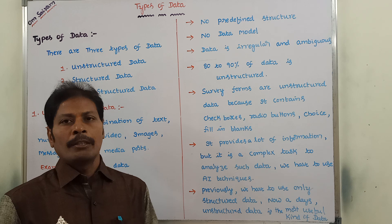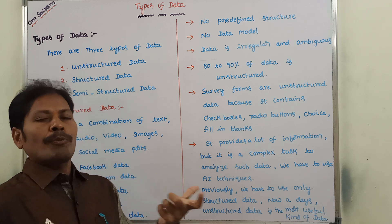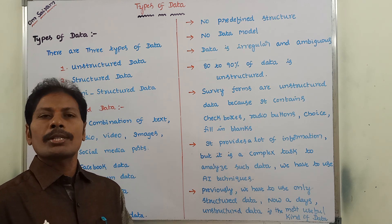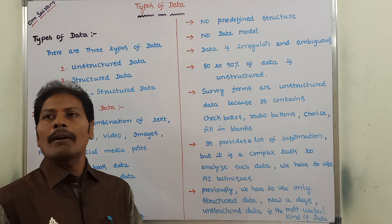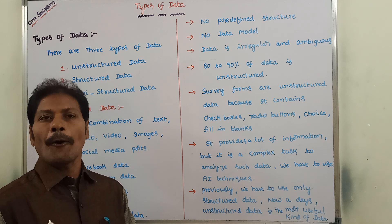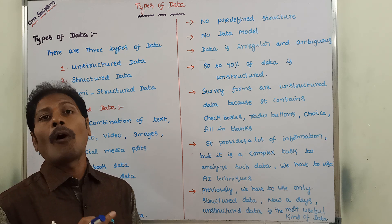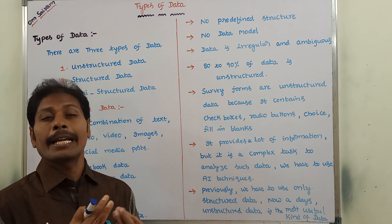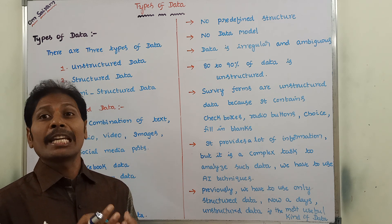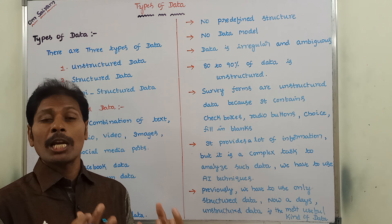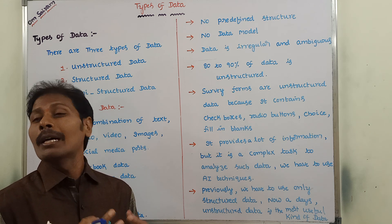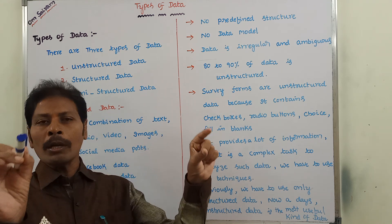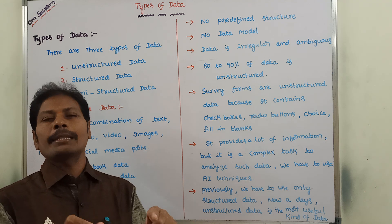First one is unstructured data. Unstructured data generally consists of audio data, video data, text data, images data, social media post data, and numbers. So these all come under unstructured data.